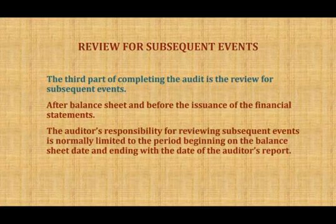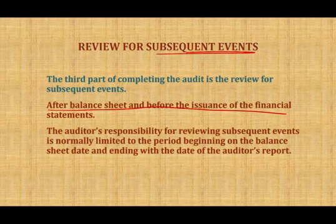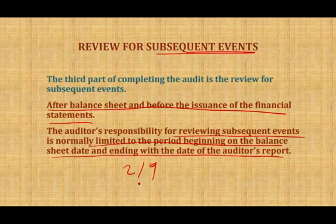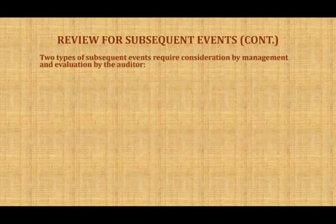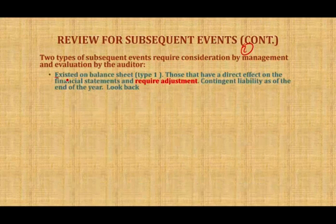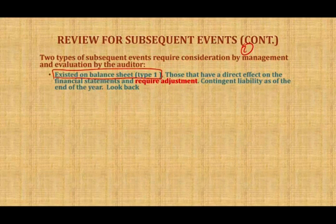The auditor's responsibility for reviewing subsequent events is normally limited to the period beginning on the balance sheet date and ending with the date of the auditor's report — basically, February 9th is when we stop our field work. There are two types of subsequent events requiring consideration by management and evaluation by the auditor. The first type consists of events that already existed on the balance sheet date.